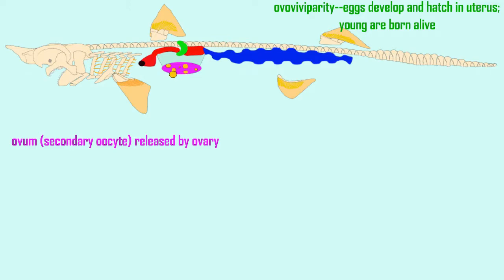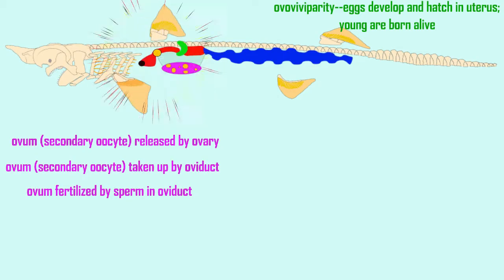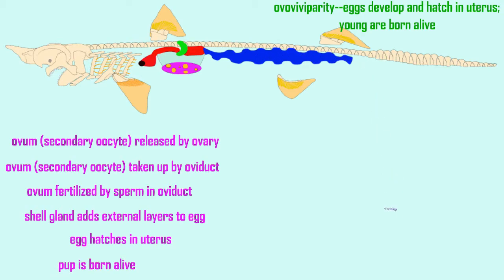Some sharks are ovoviviparous, in that the young are born alive but the female does not provide much nutrition. There is no placenta that forms, so instead the eggs simply hatch inside the uterus and then the young are subsequently born.